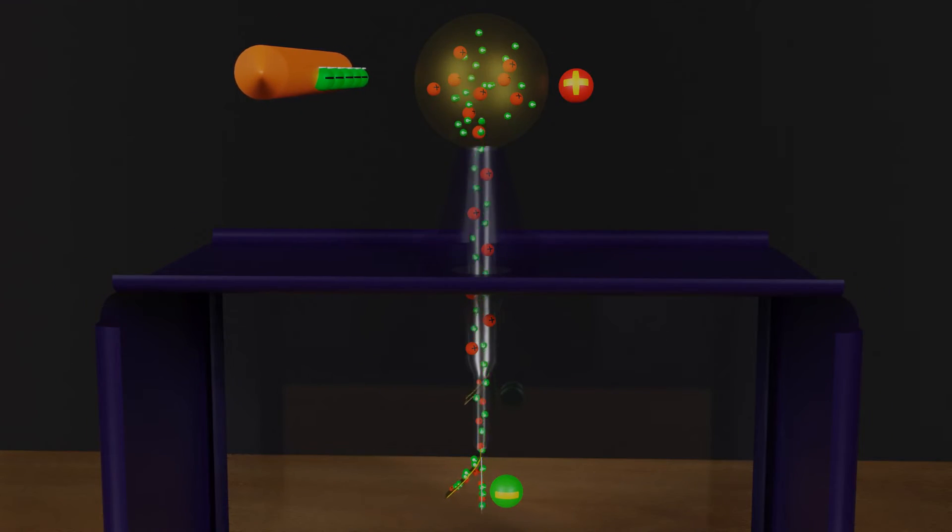And when we remove the charged rod, redistribution of charges occurs, and the leaf comes back to its initial position.